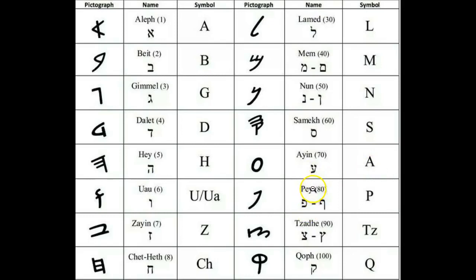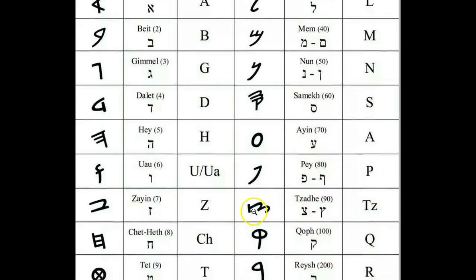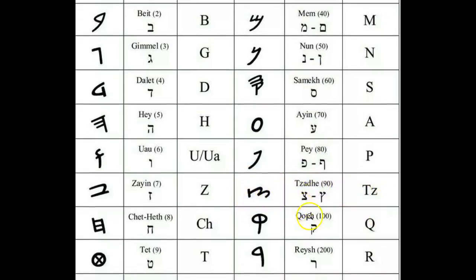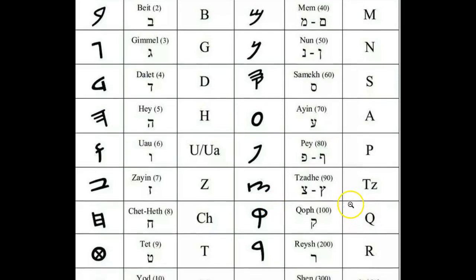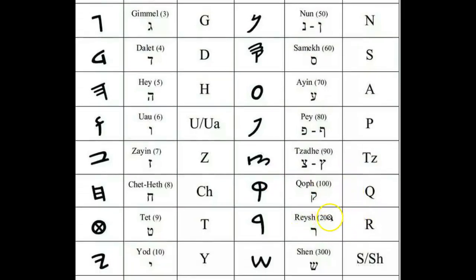The next letter is the Pa, or Pe, which means mouth, word, speak. You can see it pictographically in the Paleo-Hebrew and also in the modern, and it makes the P sound. Next is the Tzad, making the Tz or Ts sound, which looks like a fish hook pictographically. Then the Ku, or Qoph, which can represent the sun on the horizon and makes the Q sound. Then the Rosh, with a numerical value of 200, which means first or chief and makes the R sound.